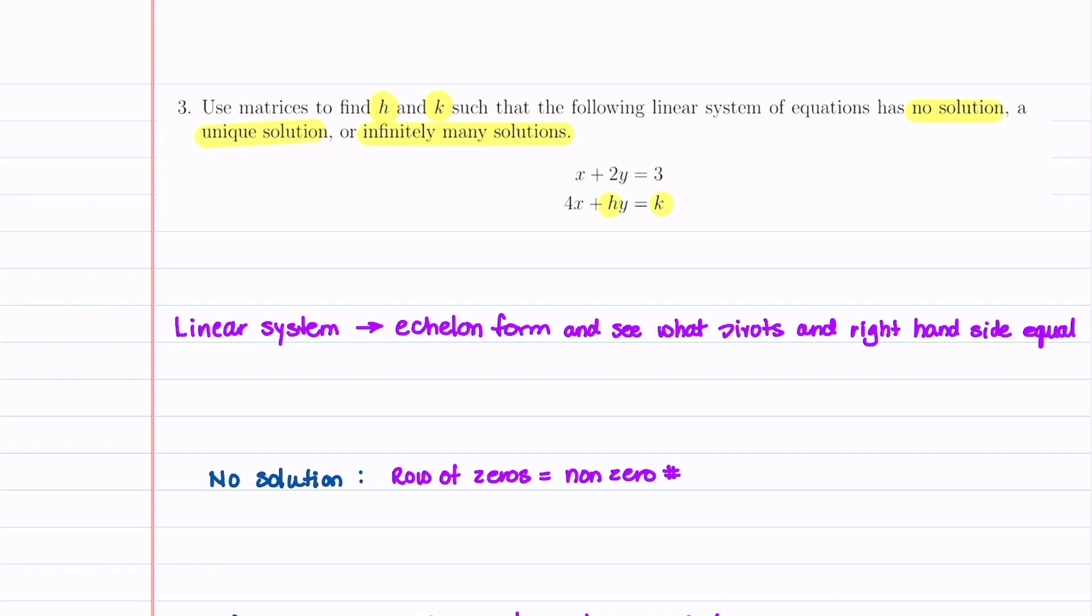To solve this problem, we're going to take our linear system and put it in echelon form. The reason is echelon form is the form that we use whenever we want to find out what type of solution we're going to have. And then we're going to see what the pivots and right-hand side equal.